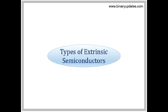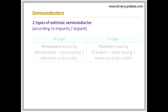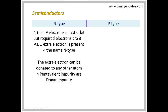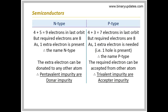Types of extrinsic semiconductors. According to the impurity or dopant added, there are two types of extrinsic semiconductors. N-type semiconductors are formed by adding pentavalent impurity, and P-type semiconductors by adding trivalent impurity. In N-type, adding 5 electrons to the already 4 valence electrons of the semiconductor results in 1 free electron, which can be donated to another atom. This makes the pentavalent impurity called donor impurity. In P-type, adding 3 electrons to the 4 valence electrons requires 1 more electron to stabilize the atom. This electron can be accepted from another atom, making the trivalent impurity called acceptor impurity.